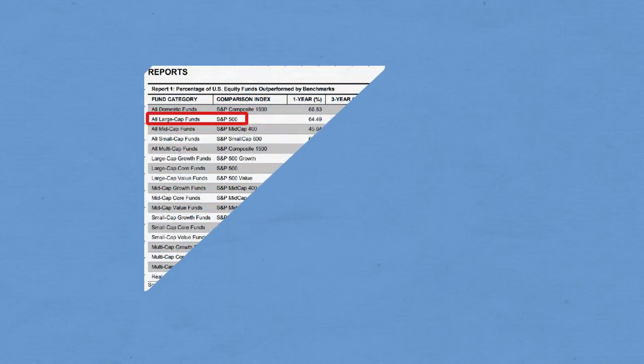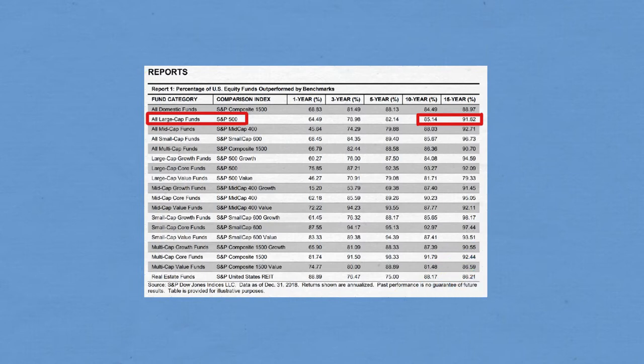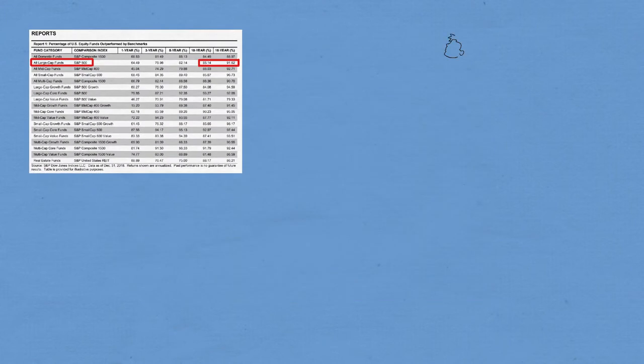92% of actively managed funds in 15 years perform worse than their index of reference. In fact, they destroy value from their portfolios of their clients. So how can we pretend to be so lucky to be able to select today, actually randomly, those eight funds that in 15 years from now will not destroy our savings?